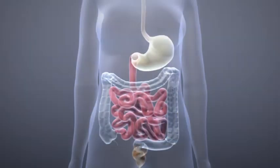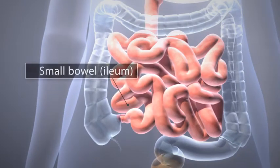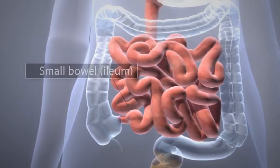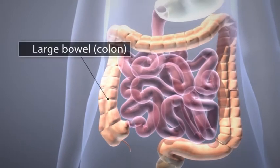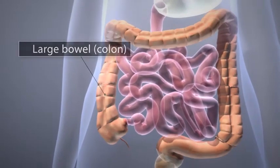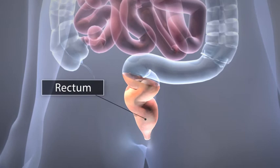This image illustrates the layout of your bowels and how surgery will affect their function. This is the small bowel, known as the ileum. This is the large bowel, known as the colon. This is the rectum.